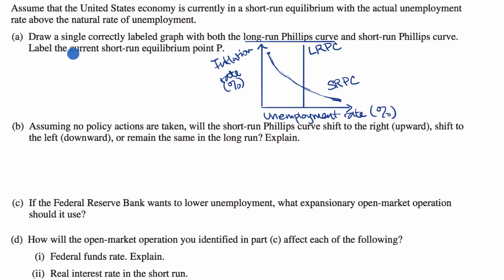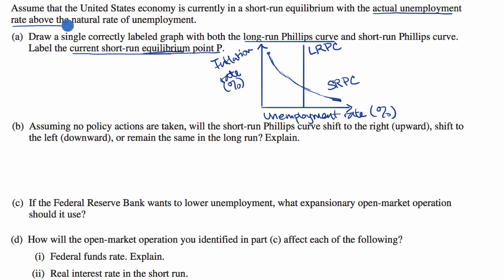Now they want us to label the current short-run equilibrium point P. A lot of times when people talk about equilibrium points, it's tempting to look at the intersection of these two curves, but that wouldn't be the case here. Every point on our short-run Phillips curve represents a potential equilibrium point. They say the actual unemployment rate is above the natural rate, so we'll be on the short-run Phillips curve to the right of the long-run Phillips curve. Let's label that point P.